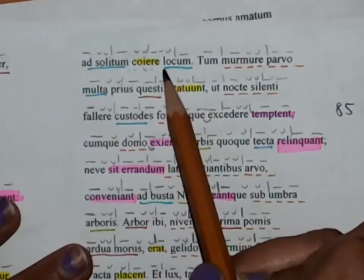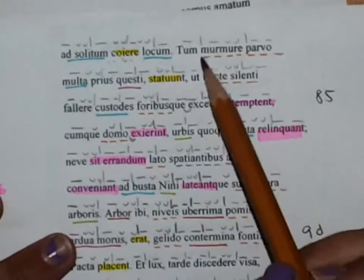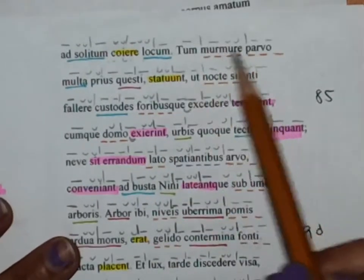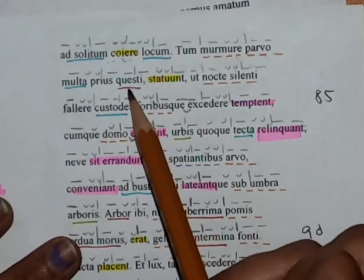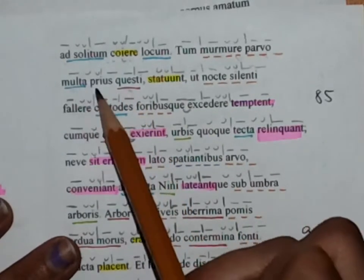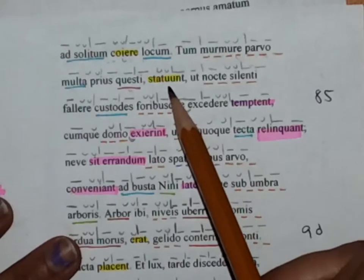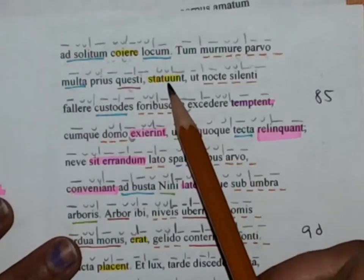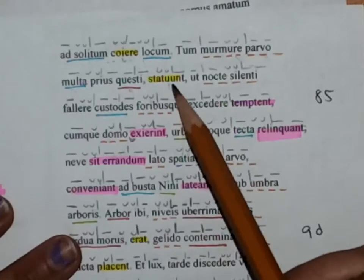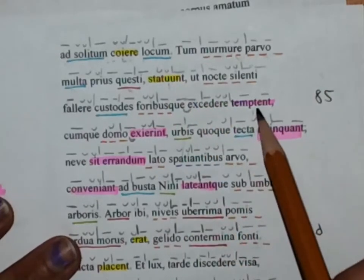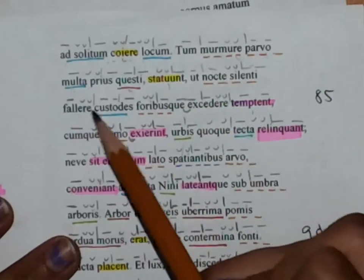Then in a small whisper, they, having complained about many things earlier, decided—now this is our main verb, this clause is introducing a result clause—they decided that they would try to trick their guardians.